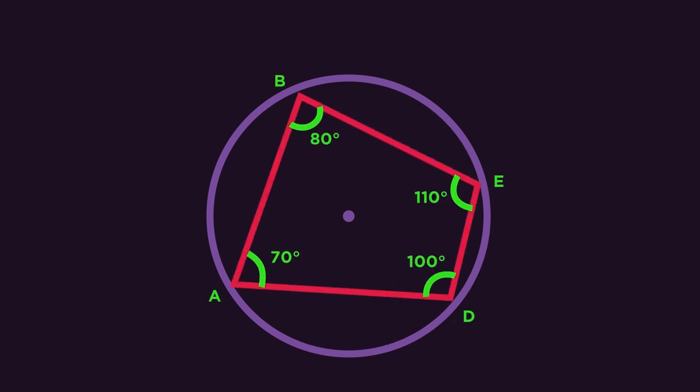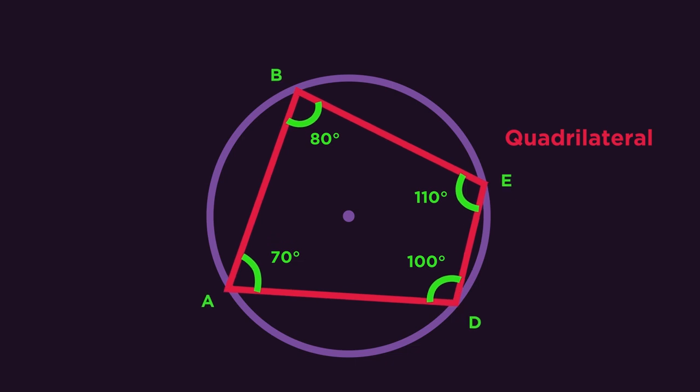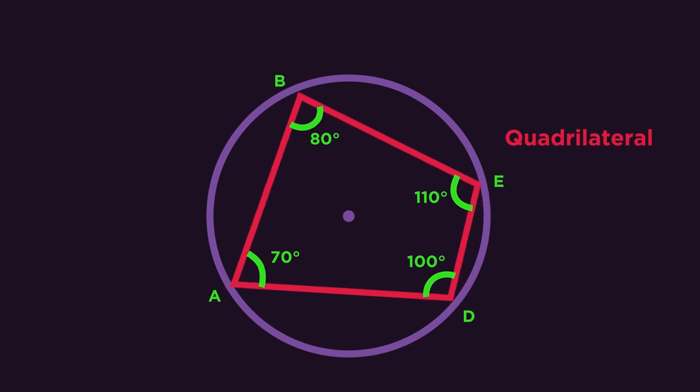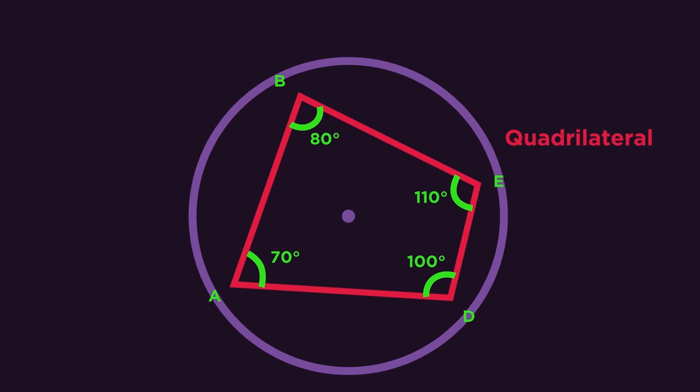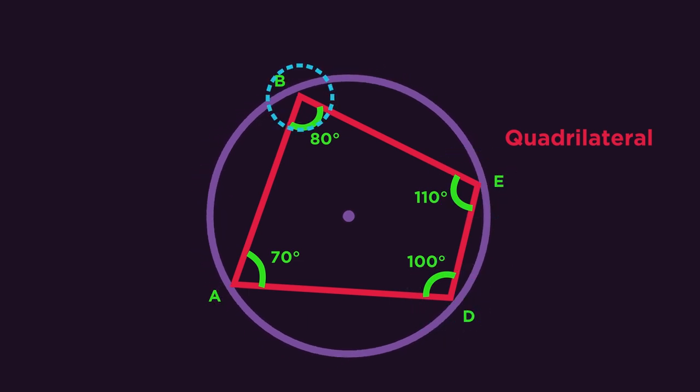It's got four sides so it must be a quadrilateral. But because it's inside a circle and all four corners or vertices are touching the circumference, we call it a cyclic quadrilateral.